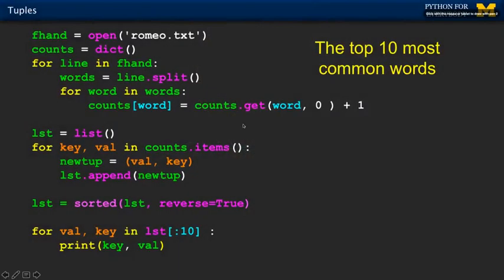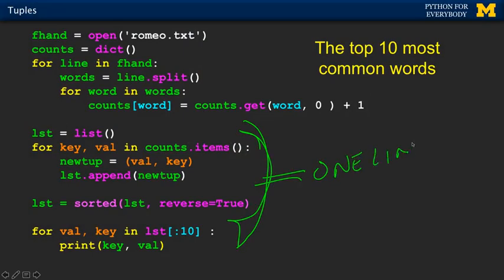I encourage you to understand every single line of this code. Now, this next slide is not something I'm insisting you understand, but some of you might find it fascinating. I can do this bottom part — the sorting into value-key tuples — all in one line of code that takes the dictionary and ends up with the sorted tuples in value order.